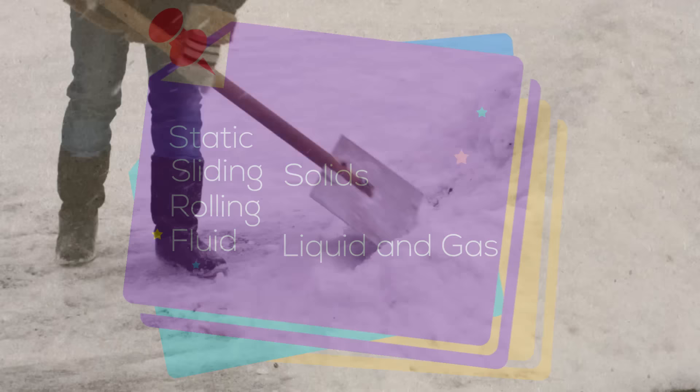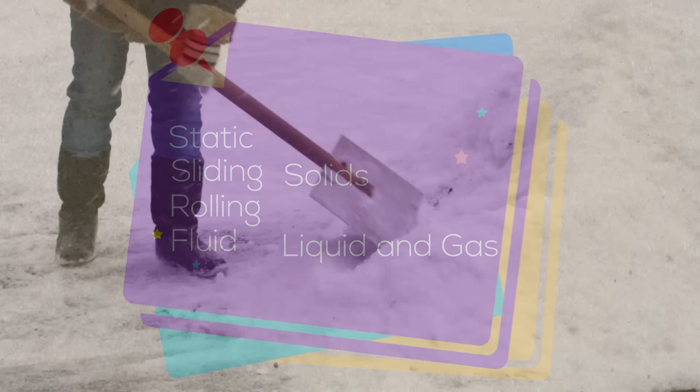Static friction occurs when an object is resting on a surface. The static friction between these boots and the snow allows this person to stand and shovel snow. When you rub your hands together, you experience sliding friction.